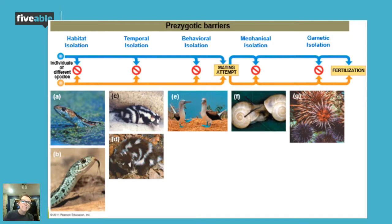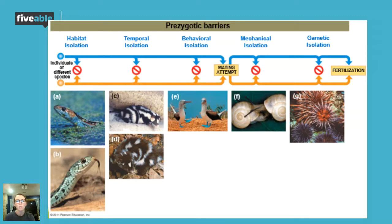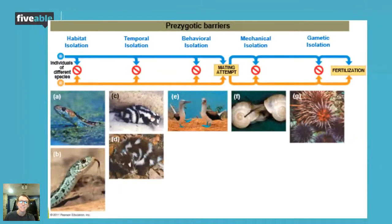Habitat isolation is followed by temporal isolation — another pre-zygotic barrier that happens before these two species can make any egg or sperm. Where habitat isolation means they live in a different area — like a long-distance relationship with no babies — temporal isolation is all about timing. In this example, you see two skunks that actually mate during different seasons: one mates during fall and one during spring. This keeps their gene pools apart by preventing gene flow because they're just not mating at the same time.